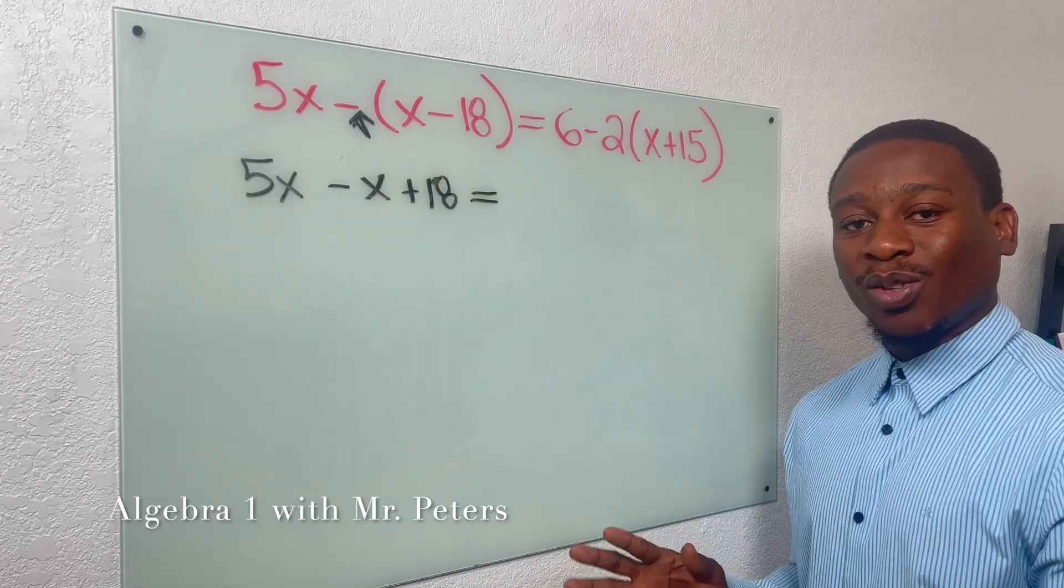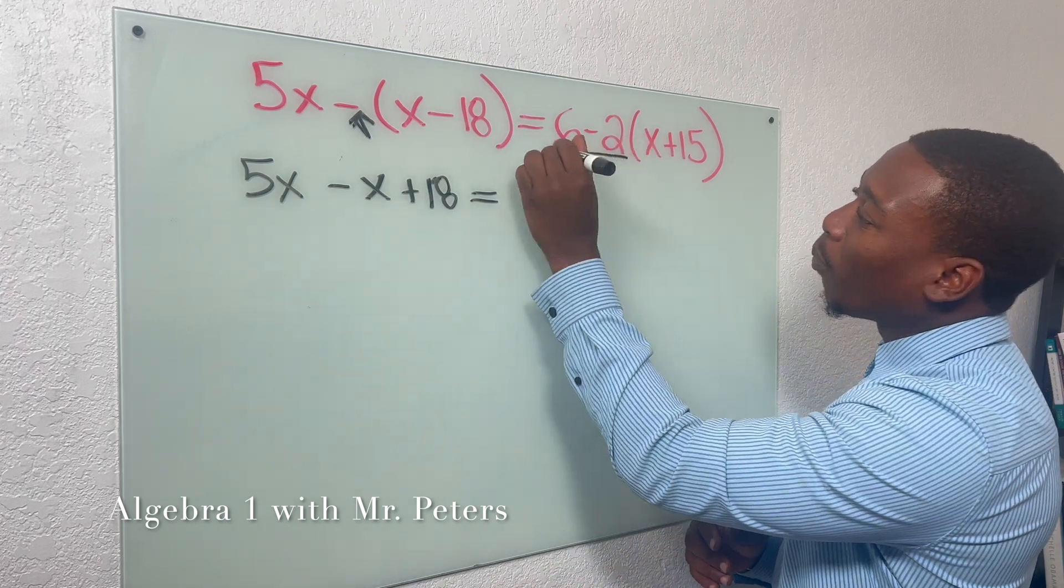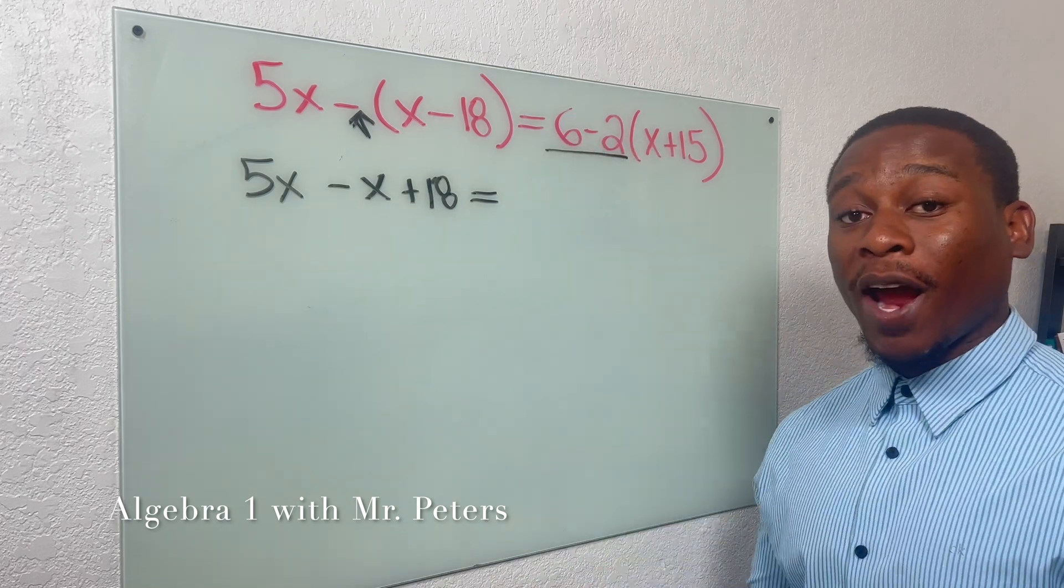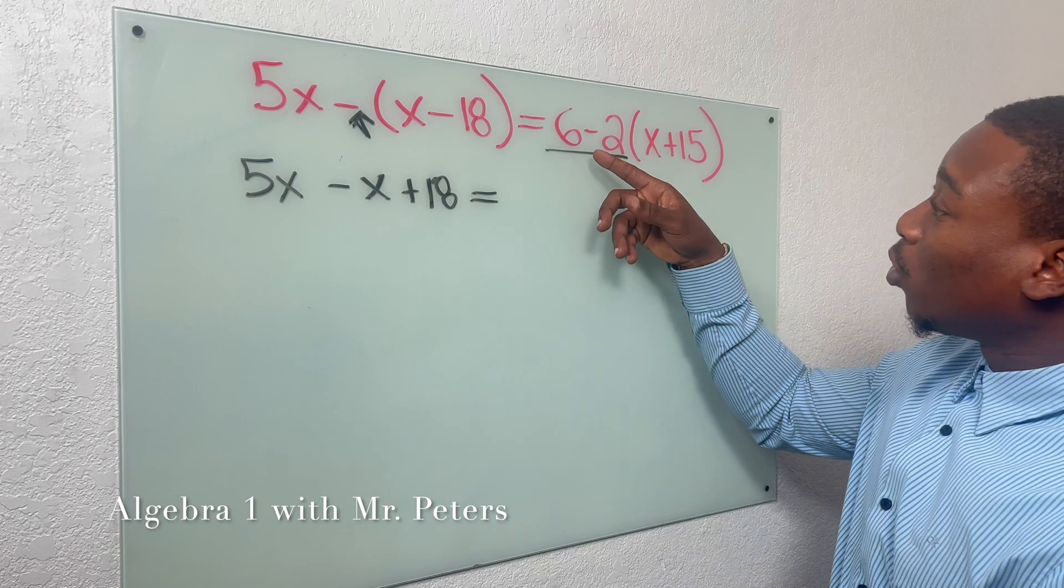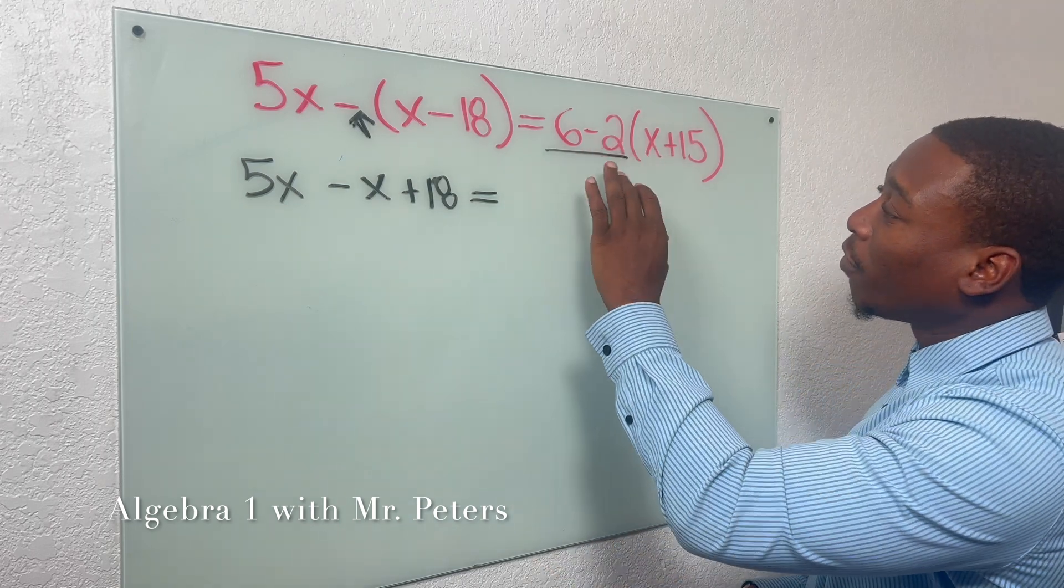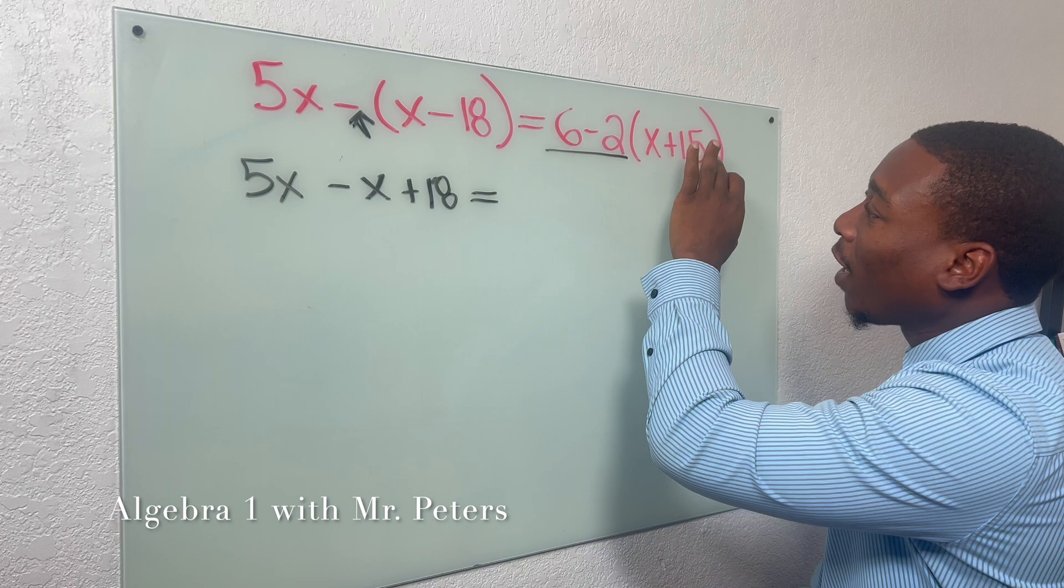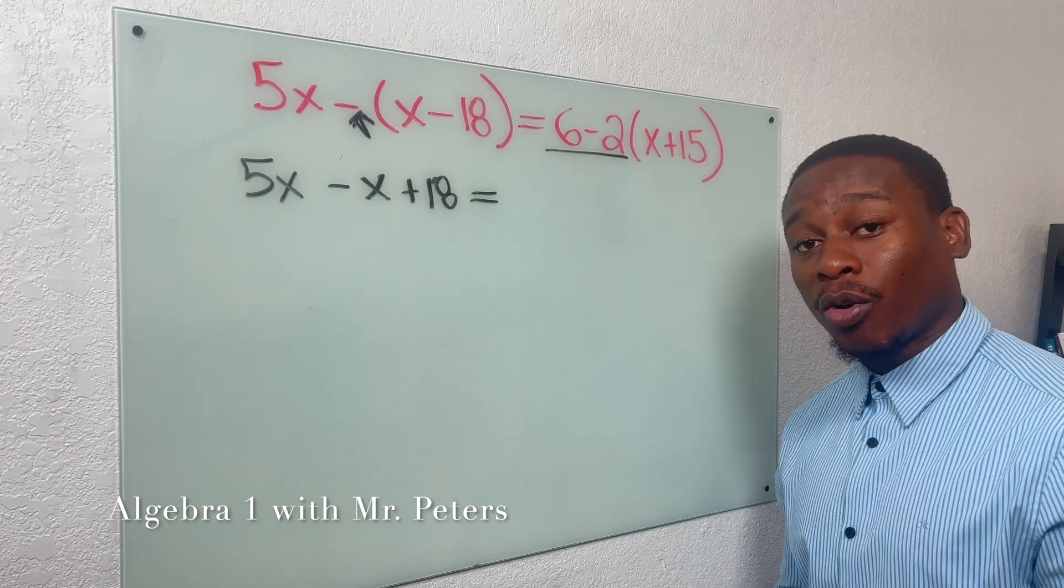A second thing that I always see students do is when we have a problem like this, they want to subtract, meaning they're going to do 6 minus 2 to get 4, and then they're going to take 4 and multiply it by x and 15. But that's not correct.